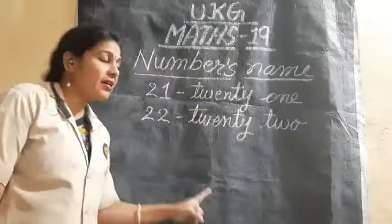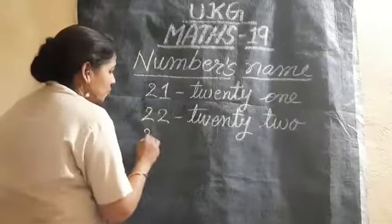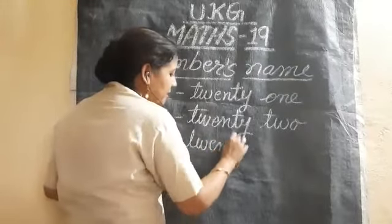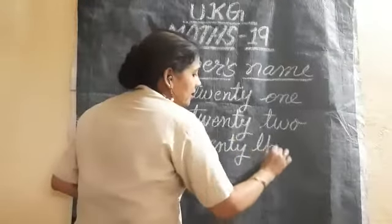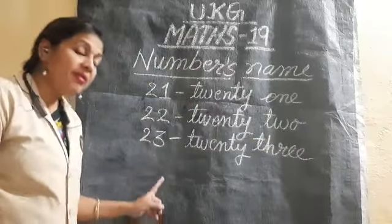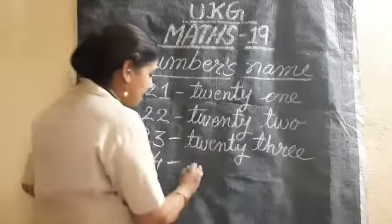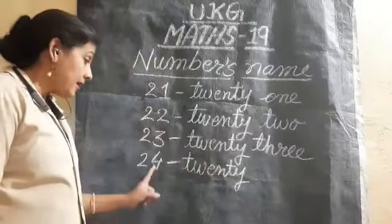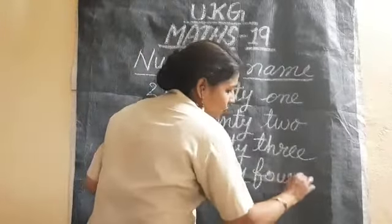The twenty part stays the same and we just change 1, 2, 3 as the number changes. For 23: T-W-E-N-T-Y, then T-H-R-E-E. For 24: T-W-E-N-T-Y, then F-O-U-R.